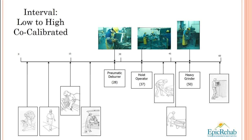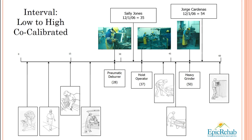We can now take the next step and compare a worker — we'll call her Sally Jones, hired on December 1, 2006 — with an ability score of 35. She can do the pneumatic deburrer job, but would be overmatched on the heavy grinder job, and it would be a stretch for her to work as a hoist operator. Jorge Cardenas has an ability score of 54 and could basically do any of those jobs because they each have a lower difficulty score. This is how item response theory works in an industrial setting.